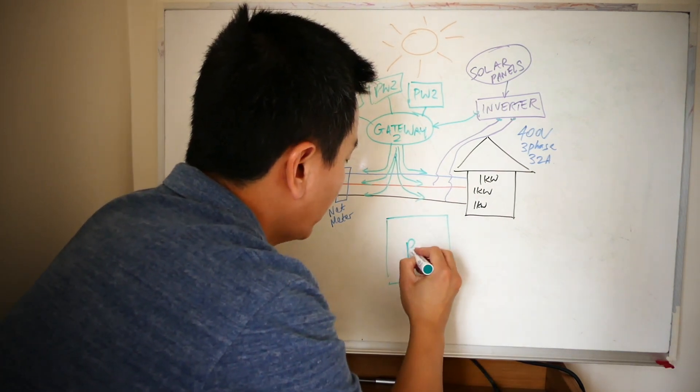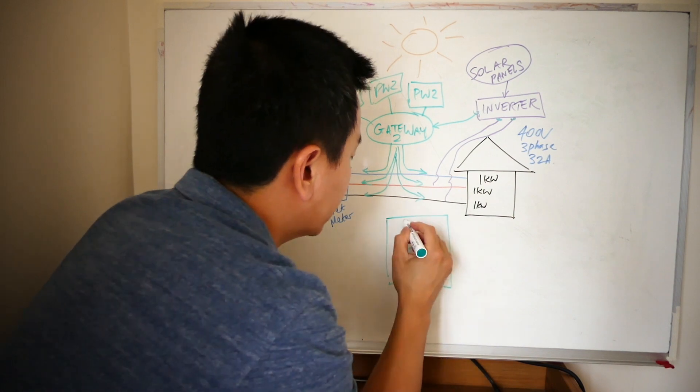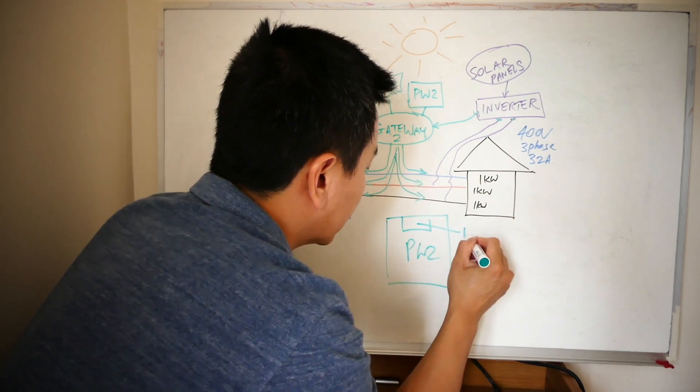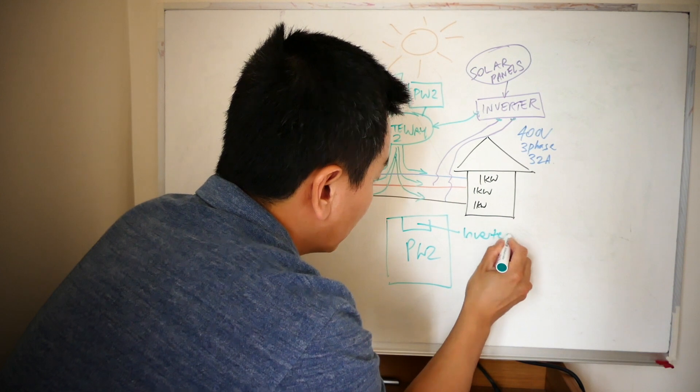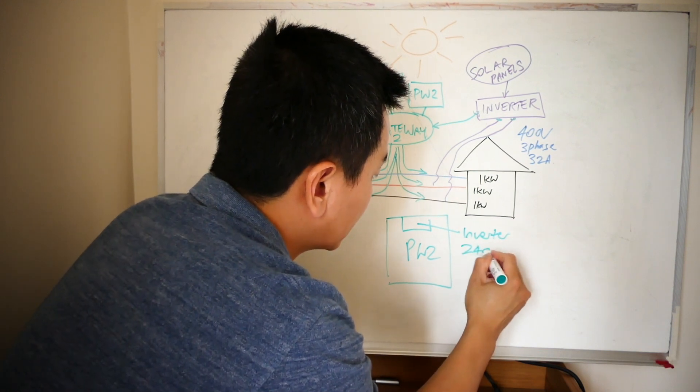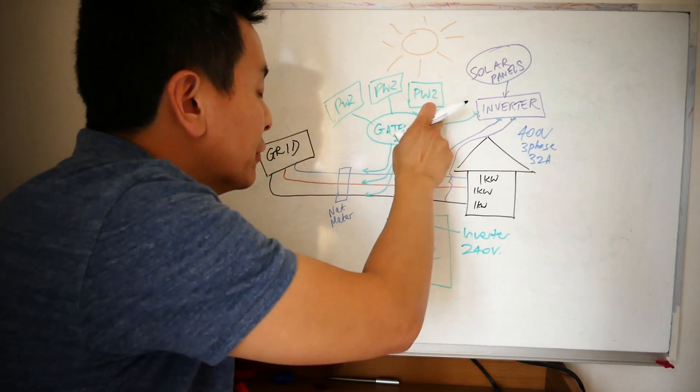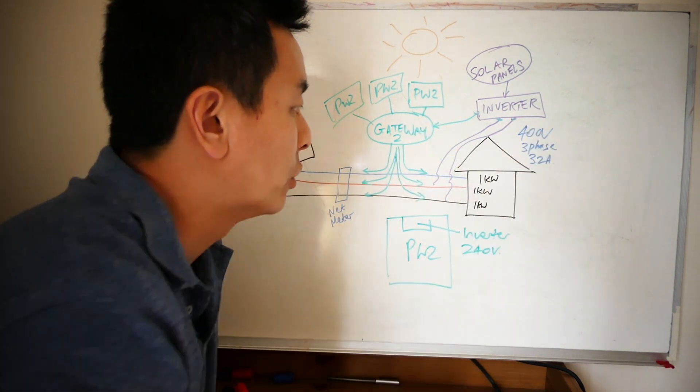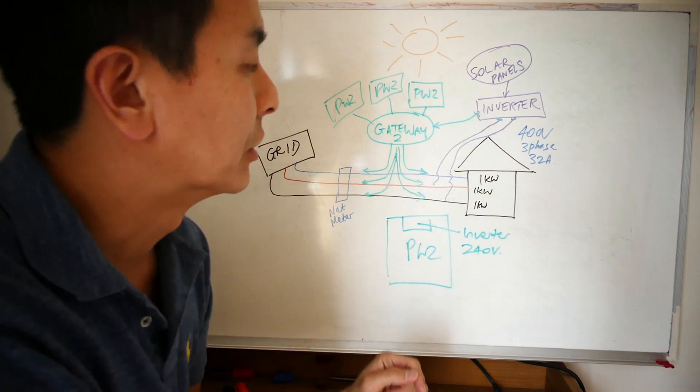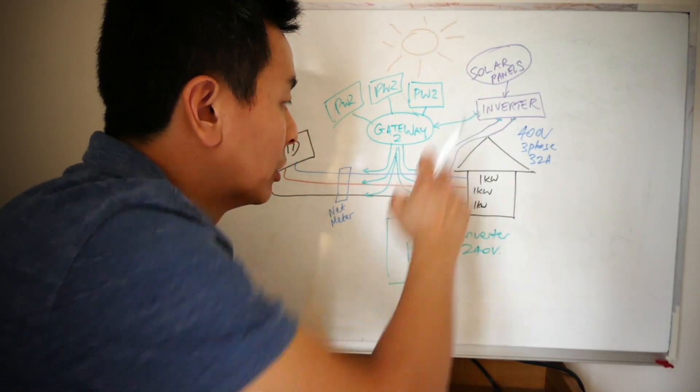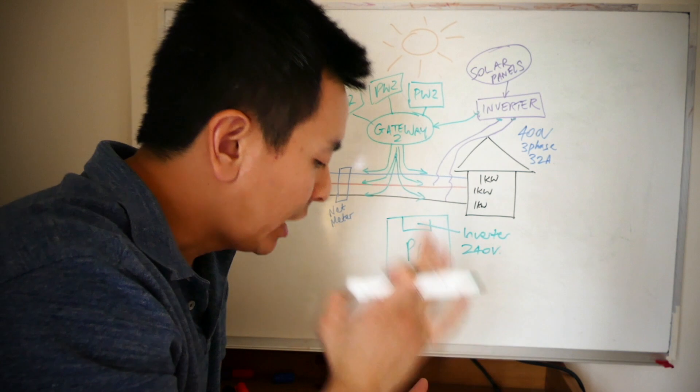Well, AC coupled means that there is a built-in inverter in there that will only allow 240 volts. So as you can see, even if it's 240 volts on each phase, it cannot supply a 400 volt supply to the solar inverter for the solar panels.